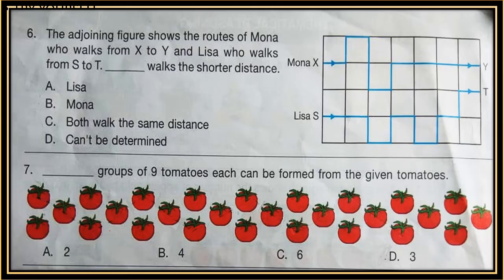Sixth: The adjoining figure shows the routes of Mona who walks from X to Y and Lisa who walks from S to T. Who walks the shorter distance? Now look at the figure. Mona walks the distance from X to Y and Lisa walks from S to T. Who walks the shorter distance? See the options carefully and choose the correct option.